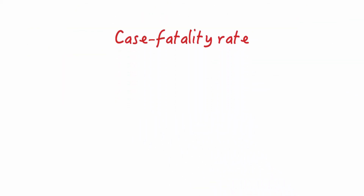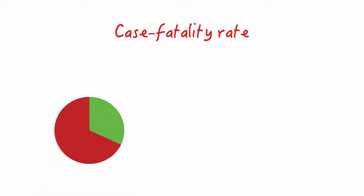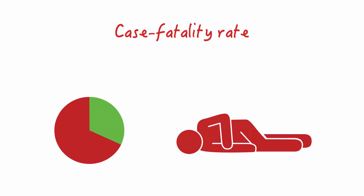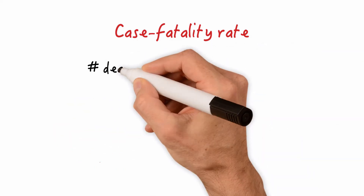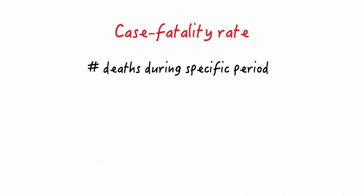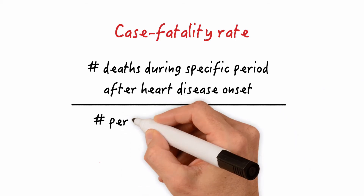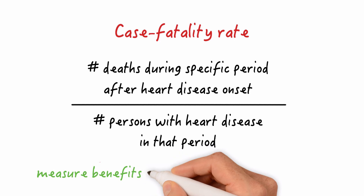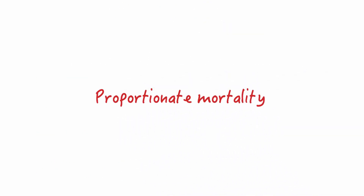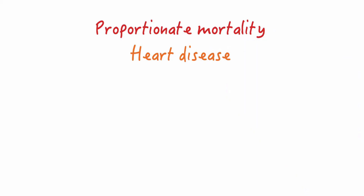Case fatality rates are defined as the proportion of people who have a disease and who are dying from it in a specified time period. It's actually a measure of disease severity. It's calculated as the number of deaths during a specific time period after disease onset — let's say heart disease — divided by the number of persons with heart disease in that period. Case fatality rates are a great way to measure the benefits of a new drug or intervention. Now let's turn to proportionate mortality, which is defined as the proportion of all deaths that are attributable to a certain disease.